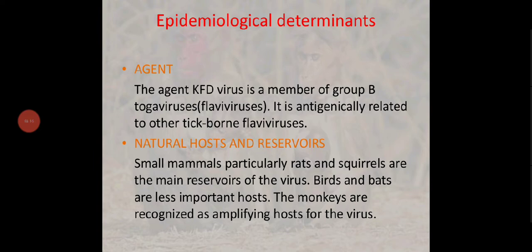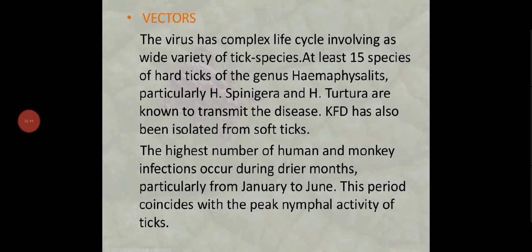In the monkey body, the virus grows very fast and multiplies there — it is a good environment for the virus. The virus has a complex life cycle involving a wide variety of tick species. At least 15 species of hard ticks of the genus Haemaphysalis — particularly H. spinigera and H. turtura — are known to transmit the disease. KFD has also been isolated from soft ticks. The highest number of human and monkey infections occurs during the drier months, from January to June, coinciding with the peak nymphal activity of ticks.